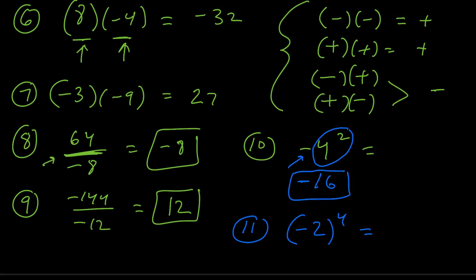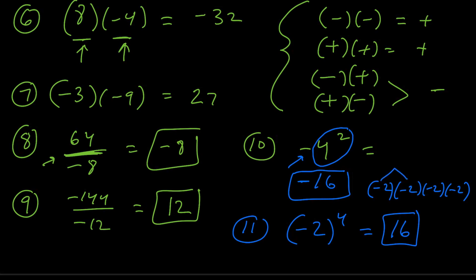For number 11, the quantity negative 2 to the fourth power — did you get positive 16? You can think of negative 2 to the fourth as four negative 2s multiplied together. Since we have an even number of negatives, we get a positive. Step by step: negative 2 times negative 2 is 4; 4 times negative 2 is negative 8; negative 8 times negative 2 is positive 16. The key here is that the whole quantity is in parentheses — unlike number 10 where we did the exponent first and then the multiplication, here we take the whole quantity in parentheses as a group, then apply the exponent.